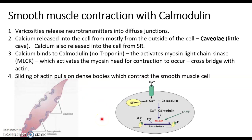In skeletal muscle, calcium is stored in the sarcoplasmic reticulum and is released when the action potential travels down the T-tubules. That calcium then binds to troponin, and tropomyosin moves out of the way so that a cross bridge can be formed between actin and myosin.